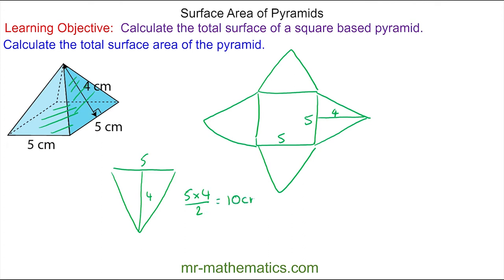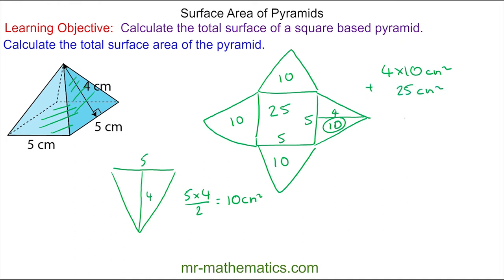That gives us 10 centimeters squared, and we have four of them because we have four triangles, plus the area of the square in the center which is five squared, which is 25 centimeters squared. So the total surface area is four times 10 centimeters squared plus the square in the middle which is 25 centimeters squared. So the total surface area of this square base pyramid is 65 centimeters squared.